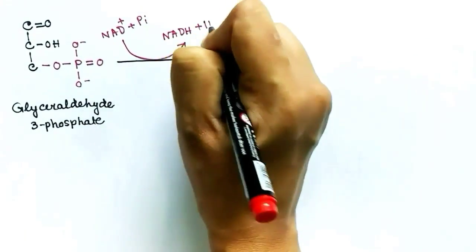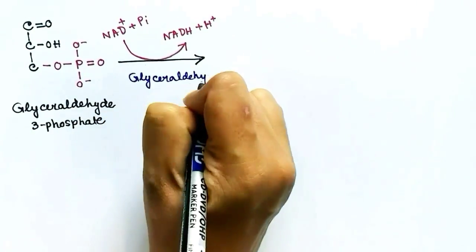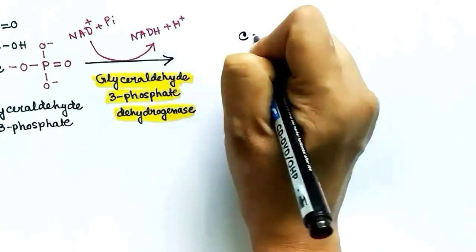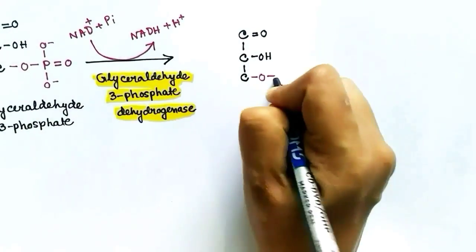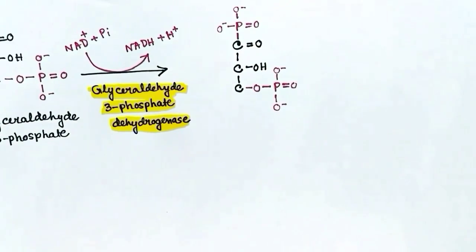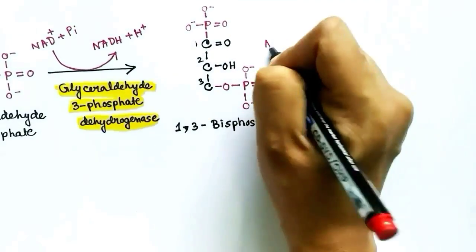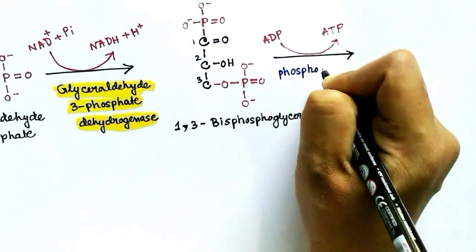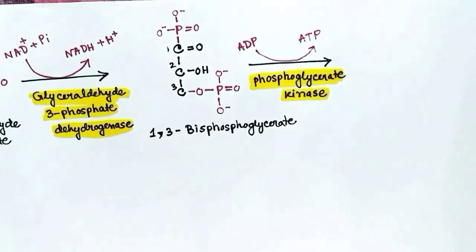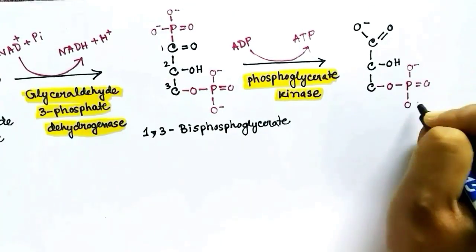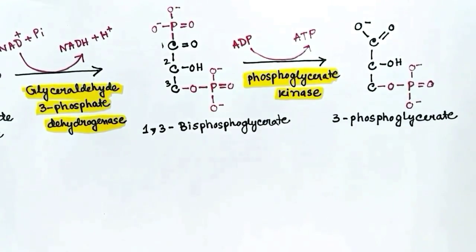Glyceraldehyde-3-phosphate has one phosphate group and one more phosphate is added to it while NAD⁺ gets reduced to NADH. The enzyme used here is glyceraldehyde-3-phosphate dehydrogenase. Dehydrogenase enzymes are used in hydrogenation or dehydrogenation reactions. The molecule formed is 1,3-bisphosphoglycerate, which now has two phosphates.